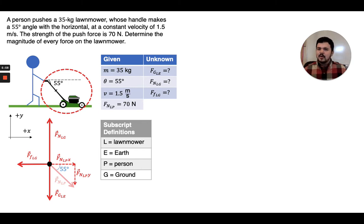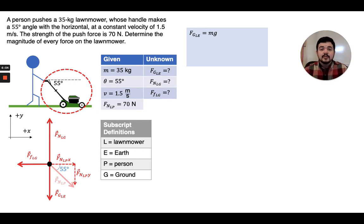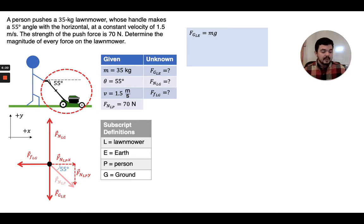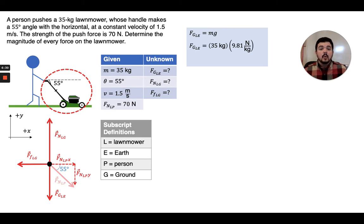When you know a mass, it's very easy to compute gravitational forces, so let's start there. We use the mathematical model: the gravitational force on the lawnmower by the earth equals the mass of the lawnmower m multiplied by the gravitational field strength of earth, lowercase g. On earth, little g has a value of 9.81 newtons per kilogram, and the mass of the lawnmower is 35 kilograms. When you multiply 35 times 9.81, you get 343 newtons. Grab your calculator and do that calculation yourself.